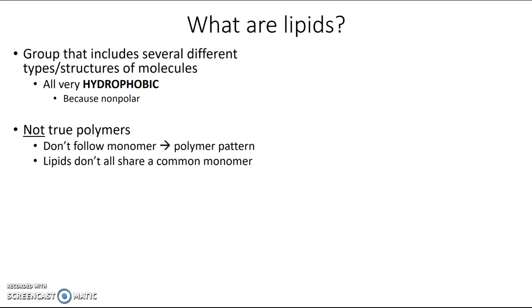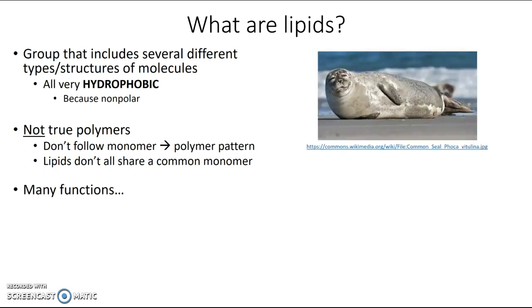In terms of their functions, they have a lot of different functions too. So let's start by looking at this little seal pup over here. You can see that this seal pup has a lot of fat on its body, and fat is one type of lipid. So this seal got lots of nutritious milk from its mother, and now it's keeping that energy from the milk in the form of fat. So some lipids are used for energy storage.